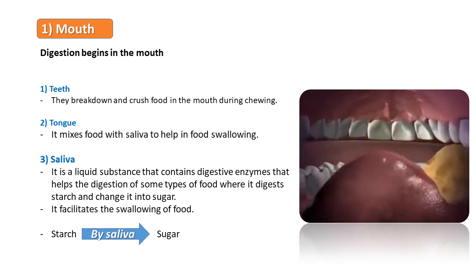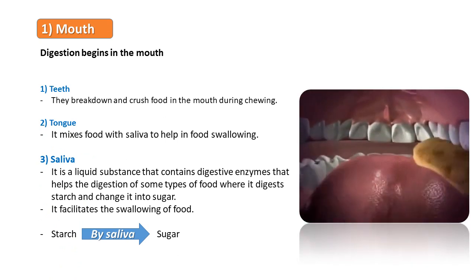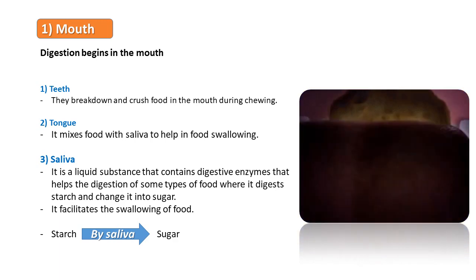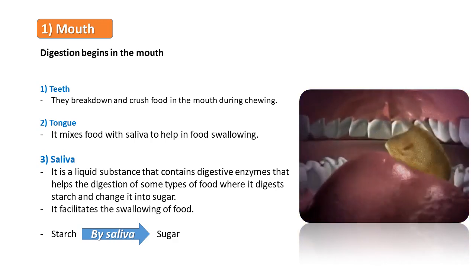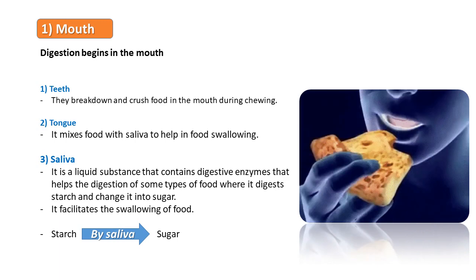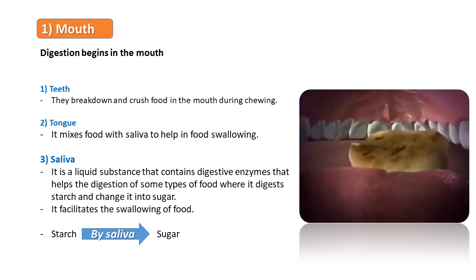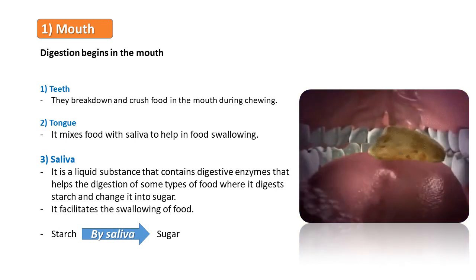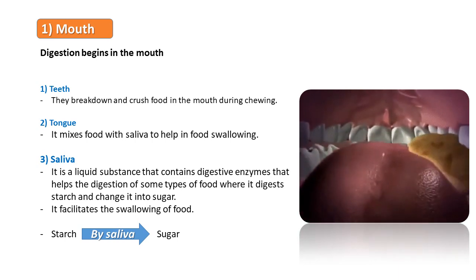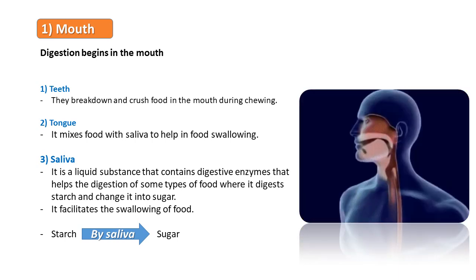Starting with the mouth — digestion begins in the mouth, where the teeth break down and crush food during chewing, and the tongue mixes food with saliva to help in food swallowing. Saliva is a liquid substance that contains digestive enzymes that help the digestion of some types of food — it digests starch into sugar and facilitates the swallowing of food.